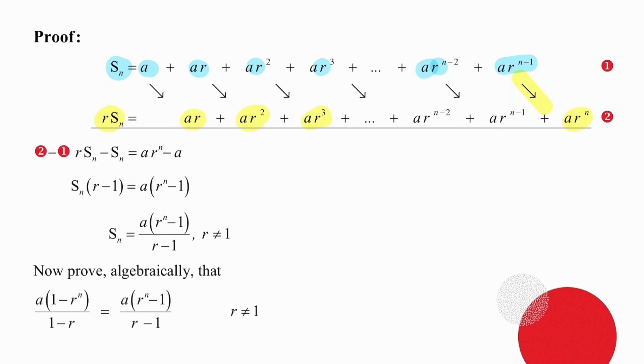Now you need to do a subtraction. Depending on what you've been asked to show, you will choose the order of the subtraction. So you can go top minus bottom or bottom minus top. We are choosing here to take the bottom row and subtract the top row. So we're going to get r times Sn minus Sn on the left.